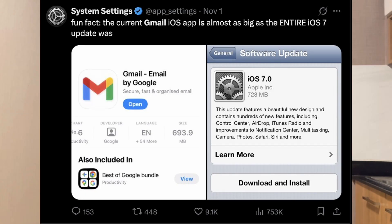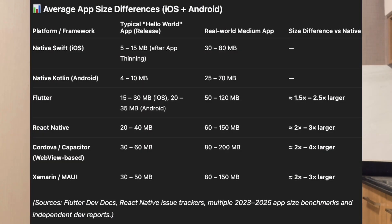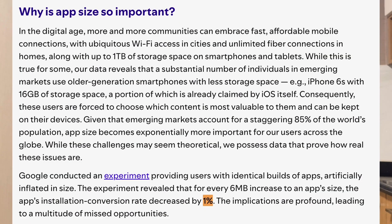You know what also feels sluggish? Downloading a huge application on bad internet. Native Swift apps can be smaller in size by up to 5 times — usually somewhere between 1.5 to 3 times compared to cross-platform apps. Users are more likely to download smaller sized apps, especially on mobile data or in slower regions. That's a direct conversion rate impact.